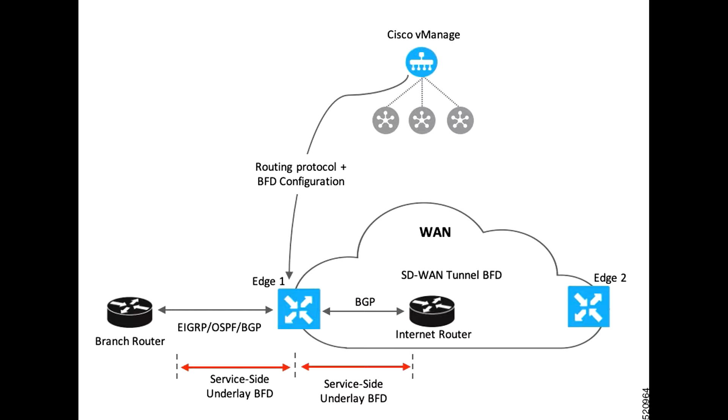BFD packets are echoed bidirectionally across each tunnel, and as such, active BFD neighbors are not formed across the SD-WAN fabric.